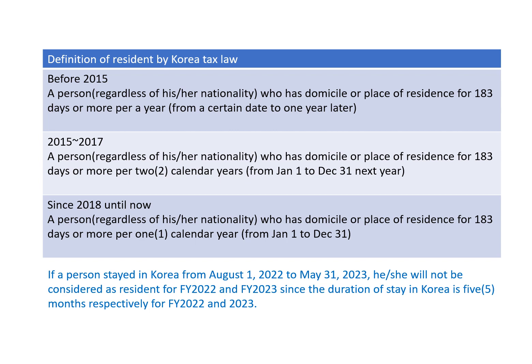For example, if a person stayed in Korea from August 1, 2022 to May 31, 2023, they stayed consecutively for 10 months. However, they would not be considered a resident for either 2022 or 2023, because the duration of stay in Korea is only five months for each calendar year. So in this case, they are free from Korea tax.